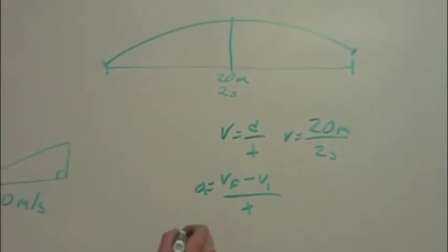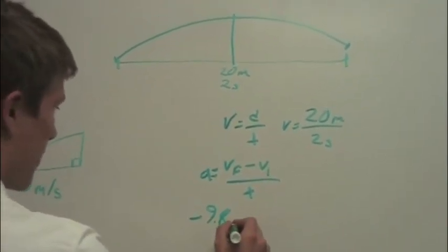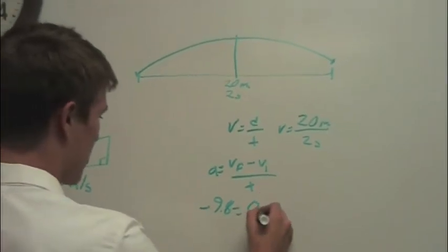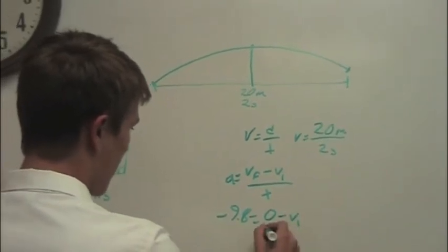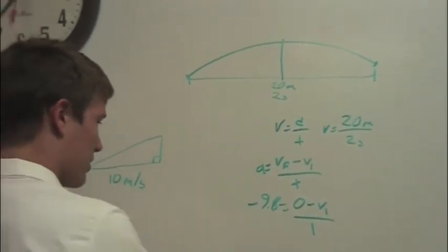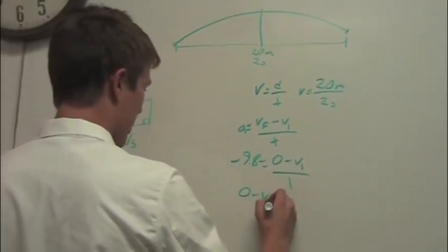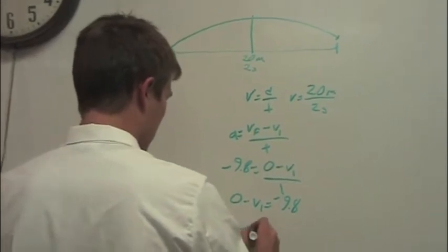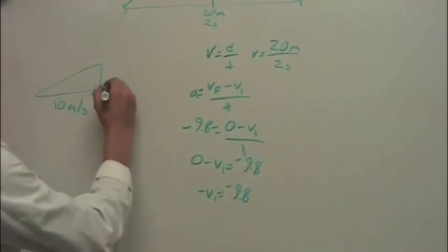We already know the acceleration of gravity is negative 9.8 meters per second squared. That equals VF — at the top of the throw the ball is about to start coming back down, so the final velocity is 0 meters per second — minus V initial, which is what we're trying to solve for, over time, which we've established is about 1 second. Rearranging using simple algebra: 0 minus VI equals negative 9.8 meters per second, so VI equals 9.8 meters per second.